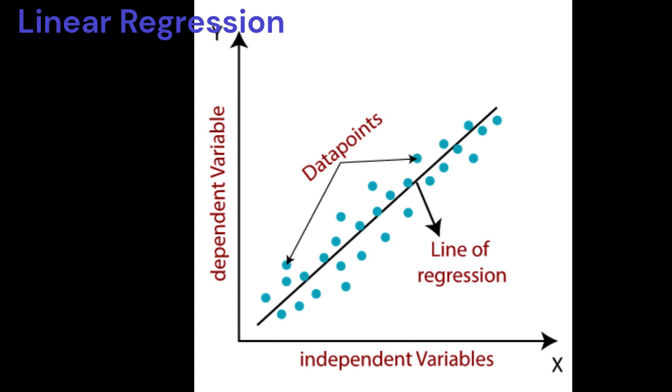Since linear regression shows the linear relationship, it finds how the value of the dependent variable is changing according to the value of the independent variable. The linear regression model provides a sloped straight line representing the relationship between the variables.